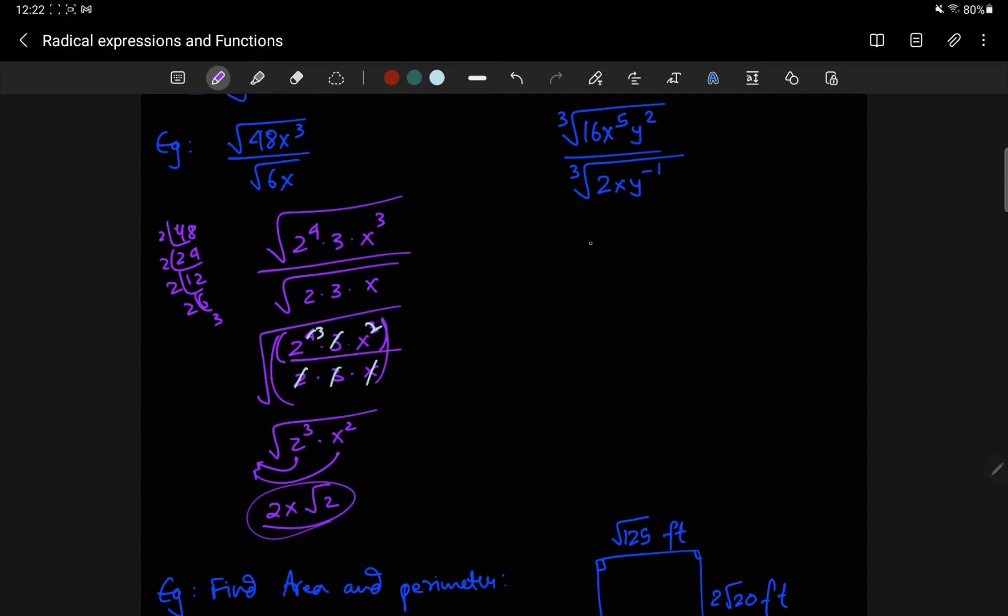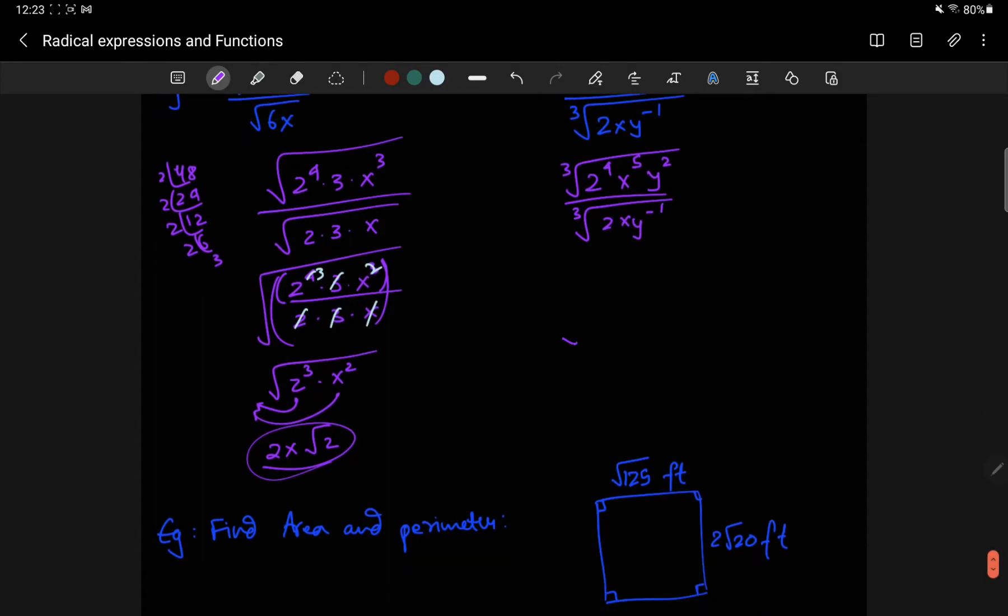Same thing here, this is going to be 2 to the 4 x to the 5 y squared cube root over cube root of 2 x y to the negative 1. So, it's the cube root of 2 to the 4 x to the 5 y squared over 2 x y minus 1.